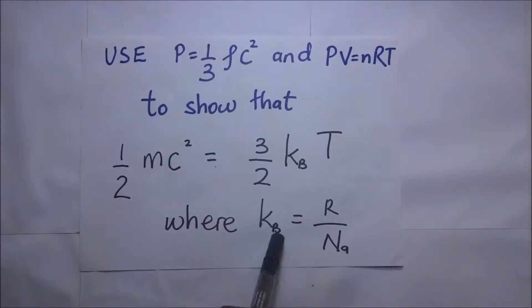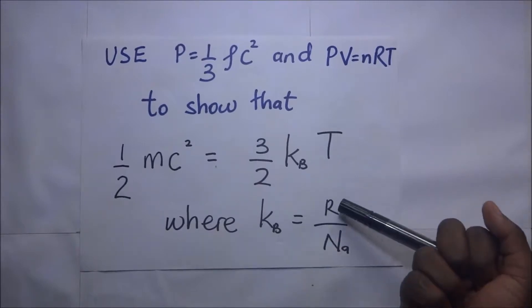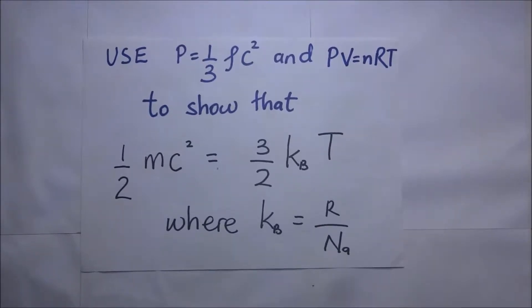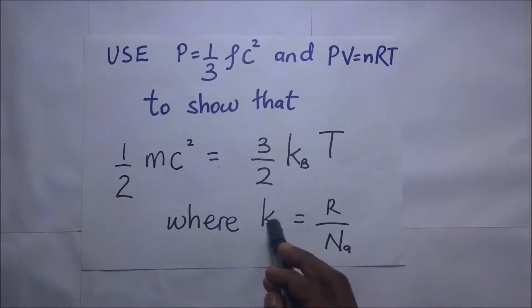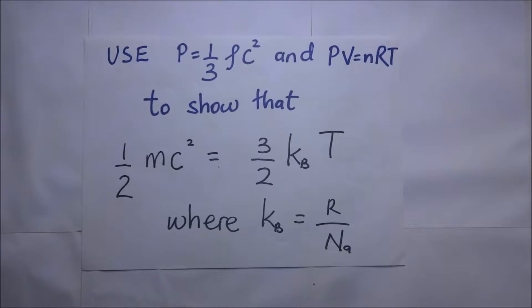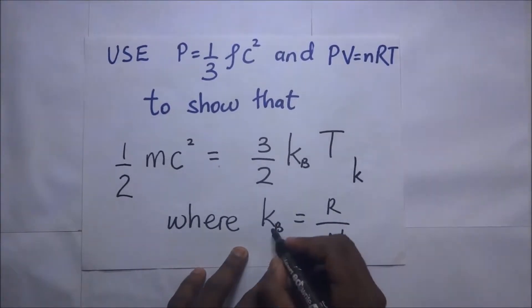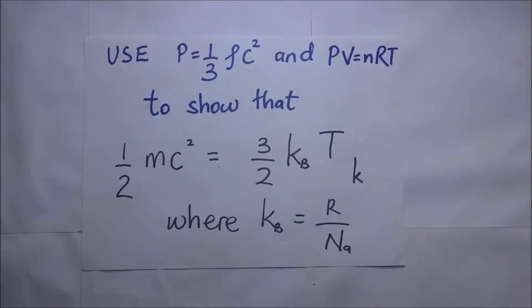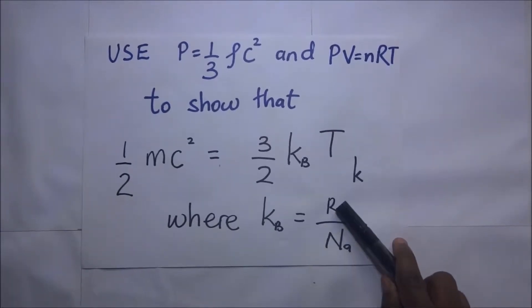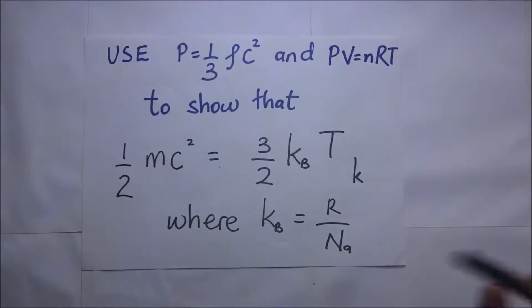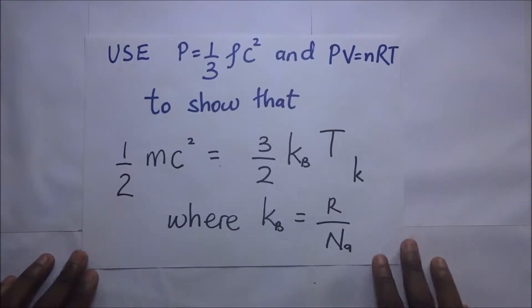K_B is the Boltzmann constant, named after Ludwig Boltzmann. It's denoted by small k or k with subscript B. It relates the average kinetic energy of a particle in a gas with the temperature of the gas. It is given by R over N_A, where R is the molar gas constant and N_A is Avogadro's number. So let's get started with solving the question.